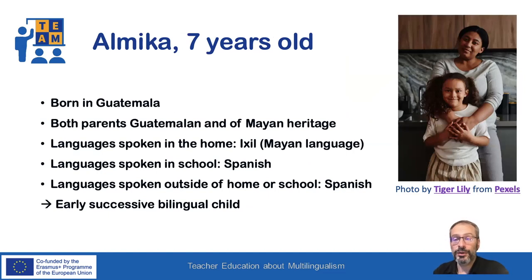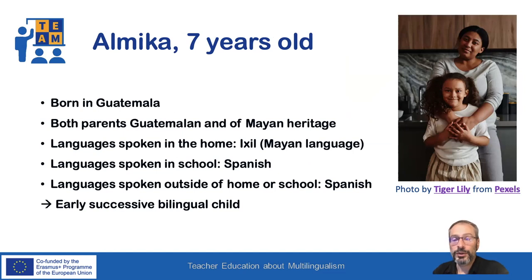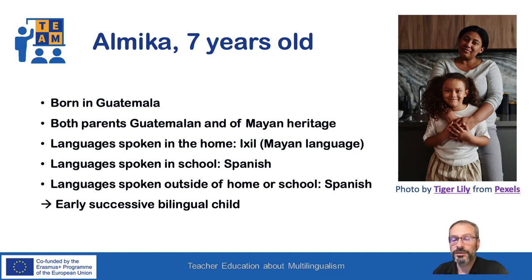Almica is seven years old and was born in Guatemala to parents of Guatemalan and Mayan heritage. At home she speaks Ixil, which is a Mayan language, and the language at school is Spanish. Outside the home and school she is using Spanish as well. Almica is a successive bilingual child.